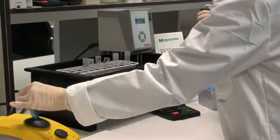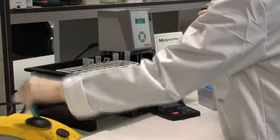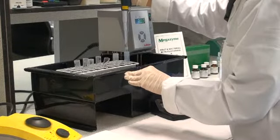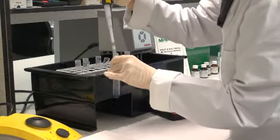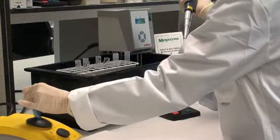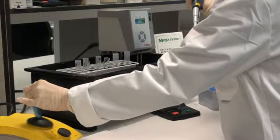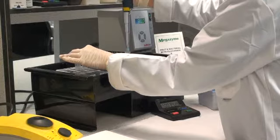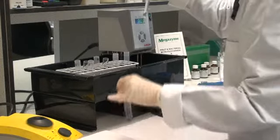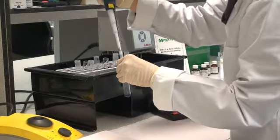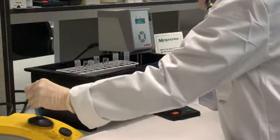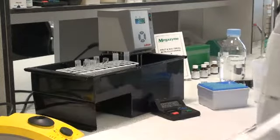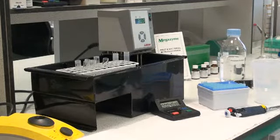Mix the contents extremely well on the vortex mixer. Change the tip and move to the second sample. Then add the enzyme extract to the substrate and mix well. Then add to the other duplicate after 15 seconds. Allow these to incubate at 30 degrees centigrade for exactly 10 minutes.